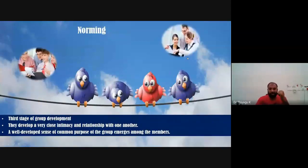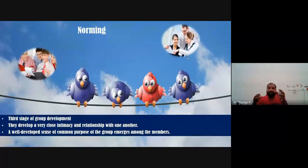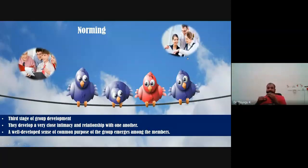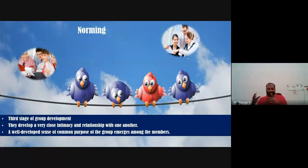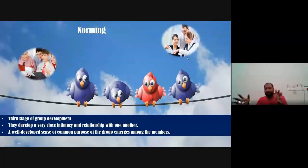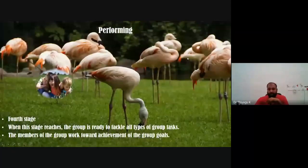The storming stage is completed when group members no longer resist the group's control, with mutual understanding and agreement about who will lead. This stage is normally completed when group members consider it better to work together for the achievement of group goals. The third stage is norming. In norming, group members really start feeling that they belong to the group — the 'we' feeling is developed. They develop very close intimacy and friendship with one another, and a well-developed sense of common purpose emerges among members.